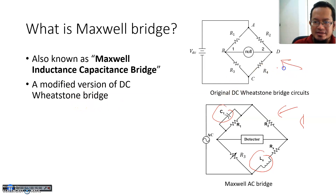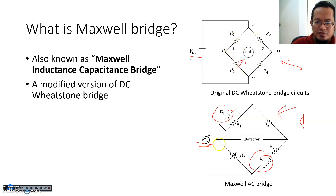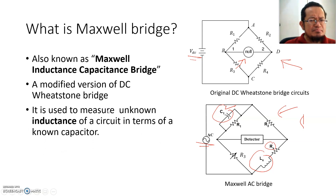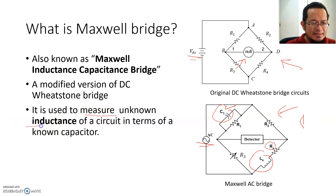The DC Wheatstone bridge previously looks like this, but with certain modifications — for example, you change the DC voltage into AC voltage. You still have all four resistors in this Maxwell bridge, but you have an additional capacitor in parallel with R1 and an unknown inductor LX. The main purpose or objective of having a Maxwell bridge is to use it to measure the unknown inductance of a circuit.